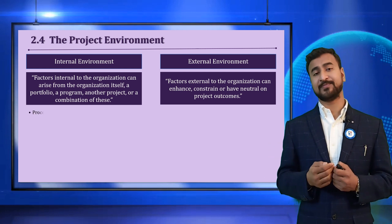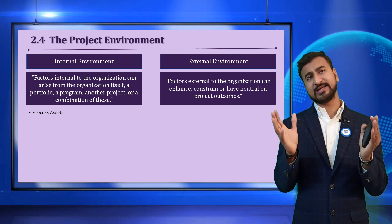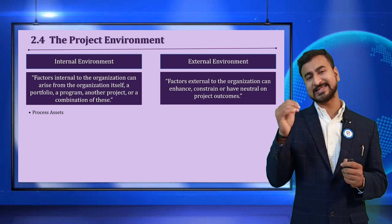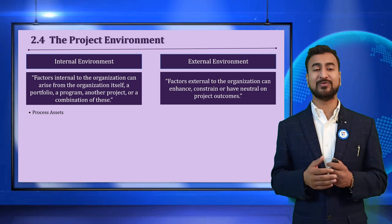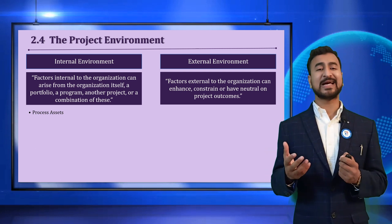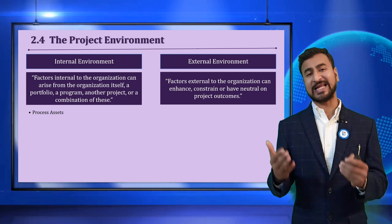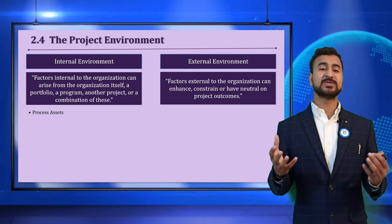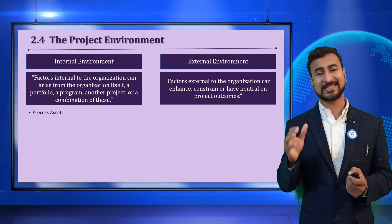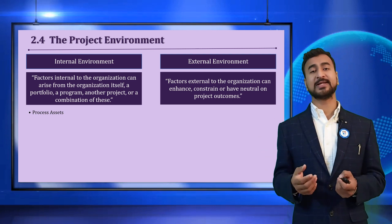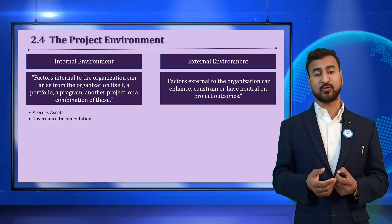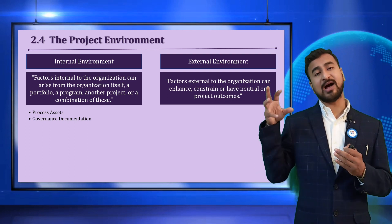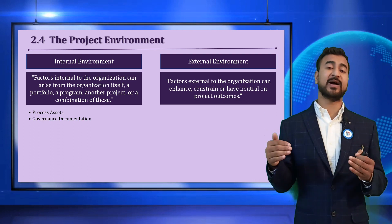Let's discuss each one, using an indicative list — there can be many more. First would be process assets. Process assets include your tools, techniques, templates, and methodology — sometimes provided by the PMO. These can be helpful for your organization, but can sometimes become bureaucratic. Next is the governance document — how corporate governance defines your policies, procedures, and the governing mechanism.